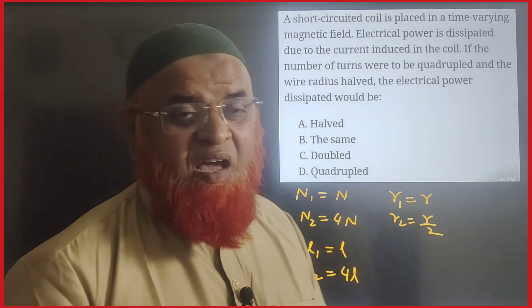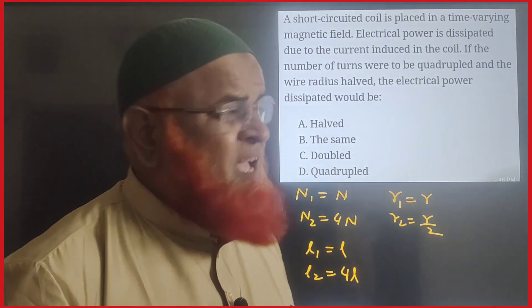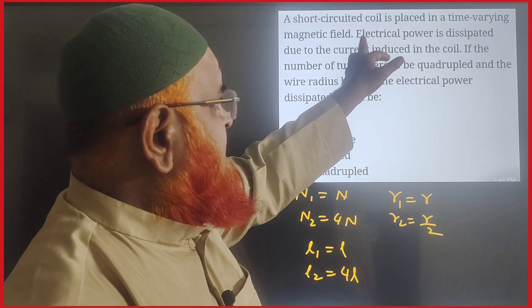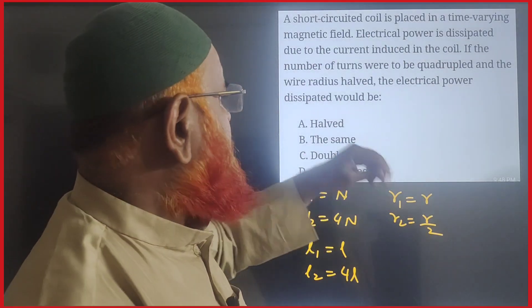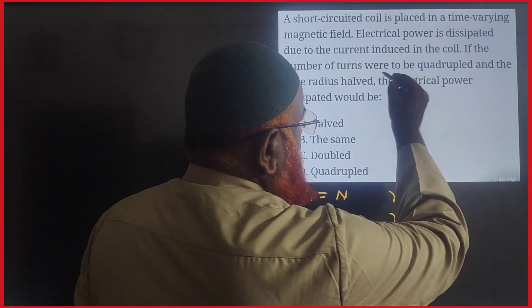My dear students, this is a problem of electromagnetic induction. In this, it is said that electrical power is dissipated due to the current induced in a coil where the number of turns are quadrupled.